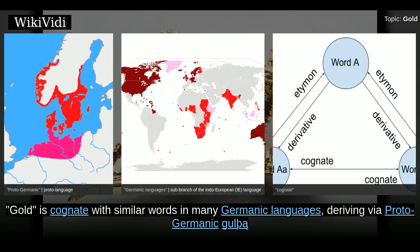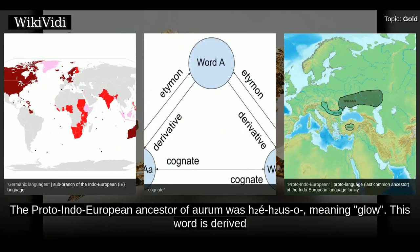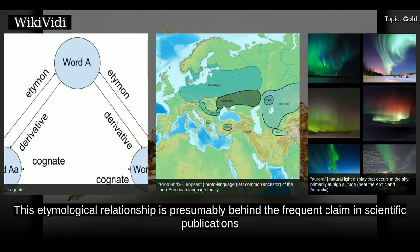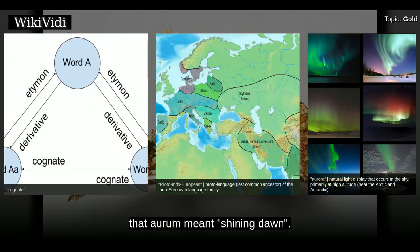Gold is cognate with similar words in many Germanic languages, deriving via Proto-Germanic *gulþą from Proto-Indo-European *ǵʰelh₃. The symbol Au is from the Latin word for gold, aurum. The Proto-Indo-European ancestor of aurum was *h₂é-h₂us-o- meaning 'glow.' This word is derived from the same root as the ancestor of the Latin word aurora, meaning 'dawn.' This etymological relationship is presumably behind the frequent claim in scientific publications that aurum meant 'shining dawn.'